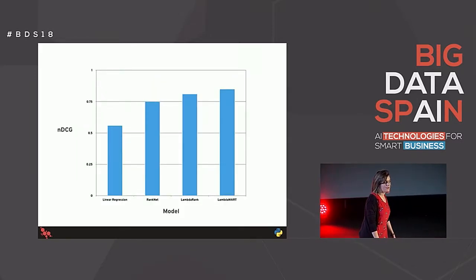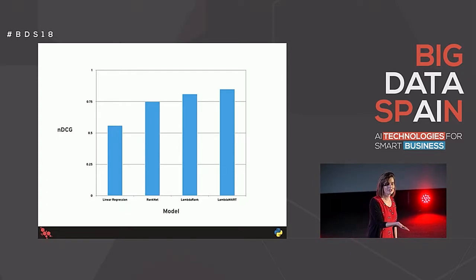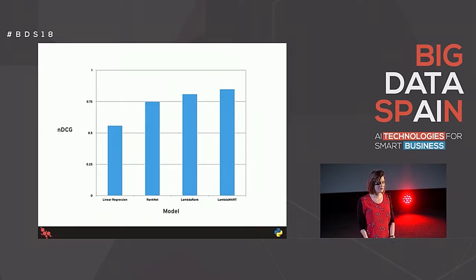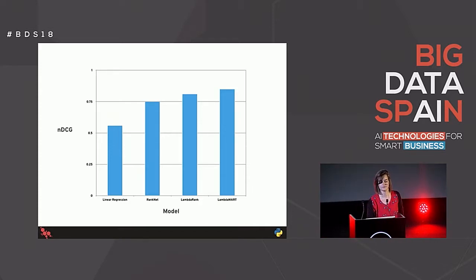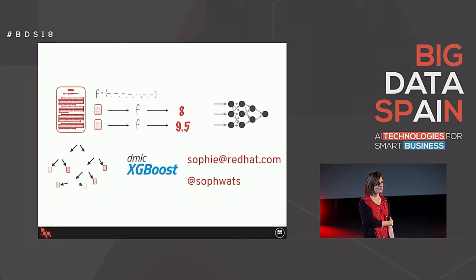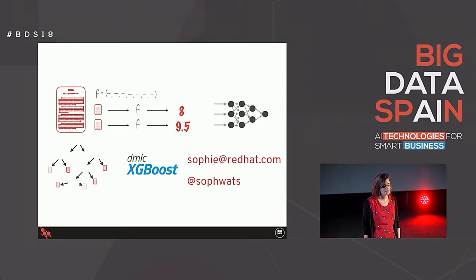A graph shows that the NDCG gets better as you go from using linear regression to RankNet, to LambdaRank, and then to the decision tree method, LambdaMart. NDCG was a number between 0 and 1, where 1 is perfect - we've got everything in the right order. We started by defining the problem of learning to rank, looked at existing methods, talked about how to develop feature vectors, went through pointwise, pairwise, and listwise methods, and finally looked at implementations in XGBoost. If you want to get in touch, I'm at Soph Watts on Twitter and Sophie at Red Hat.